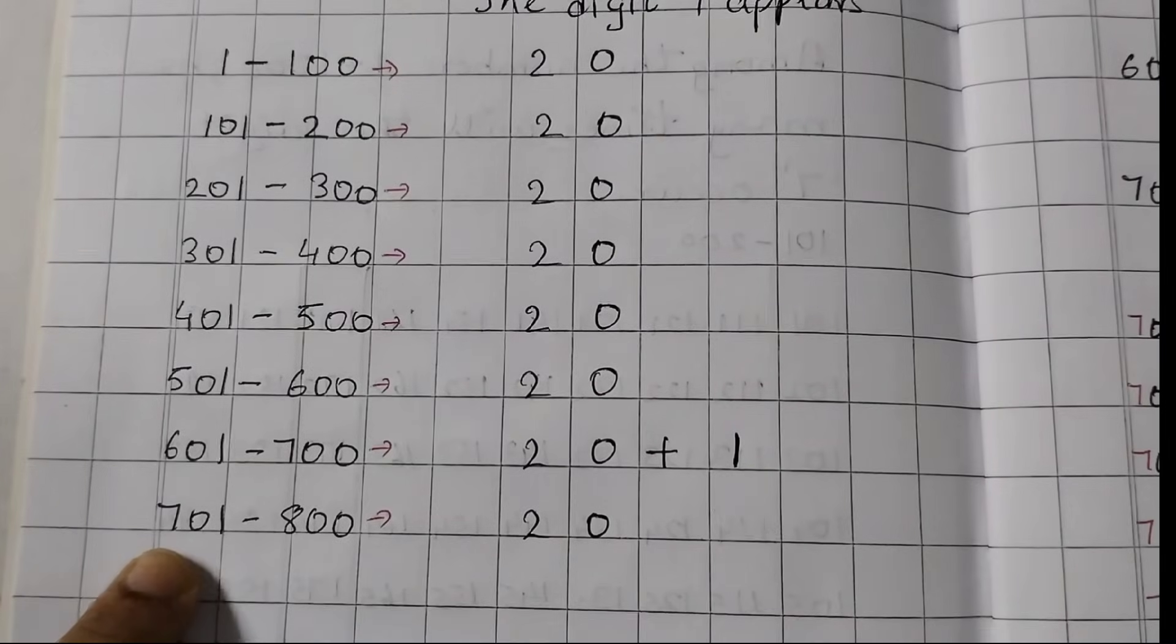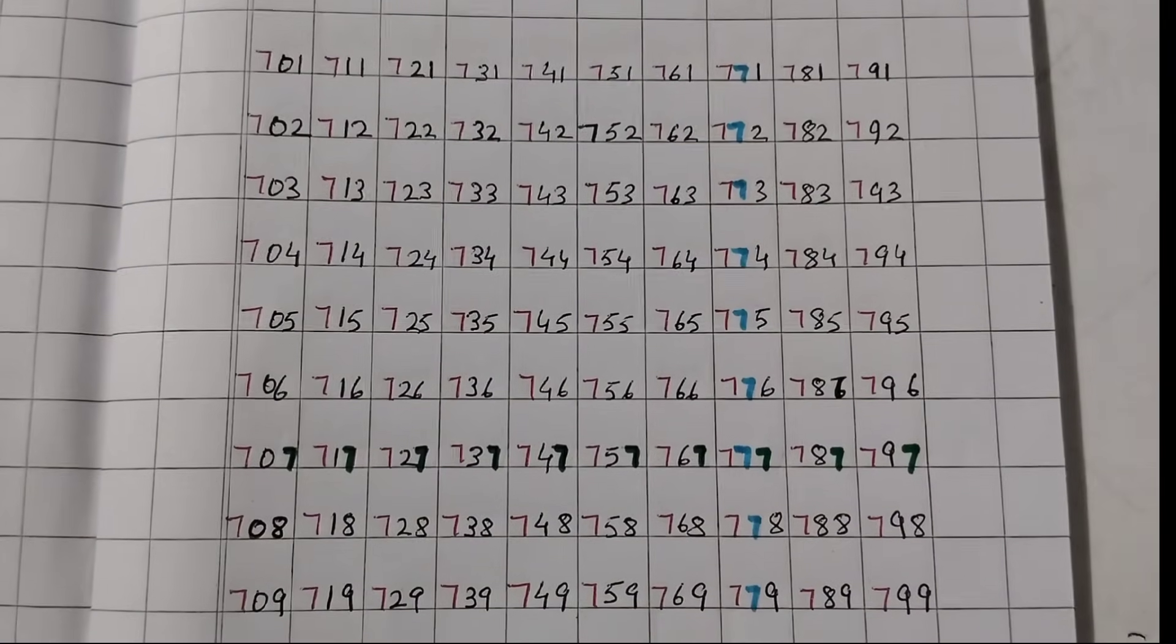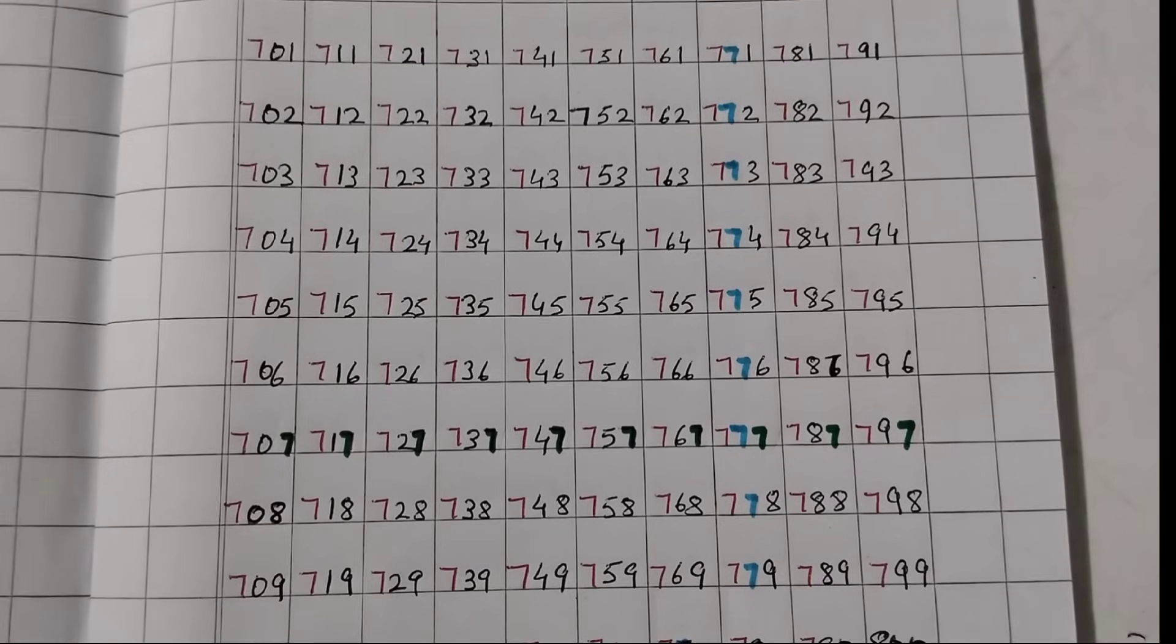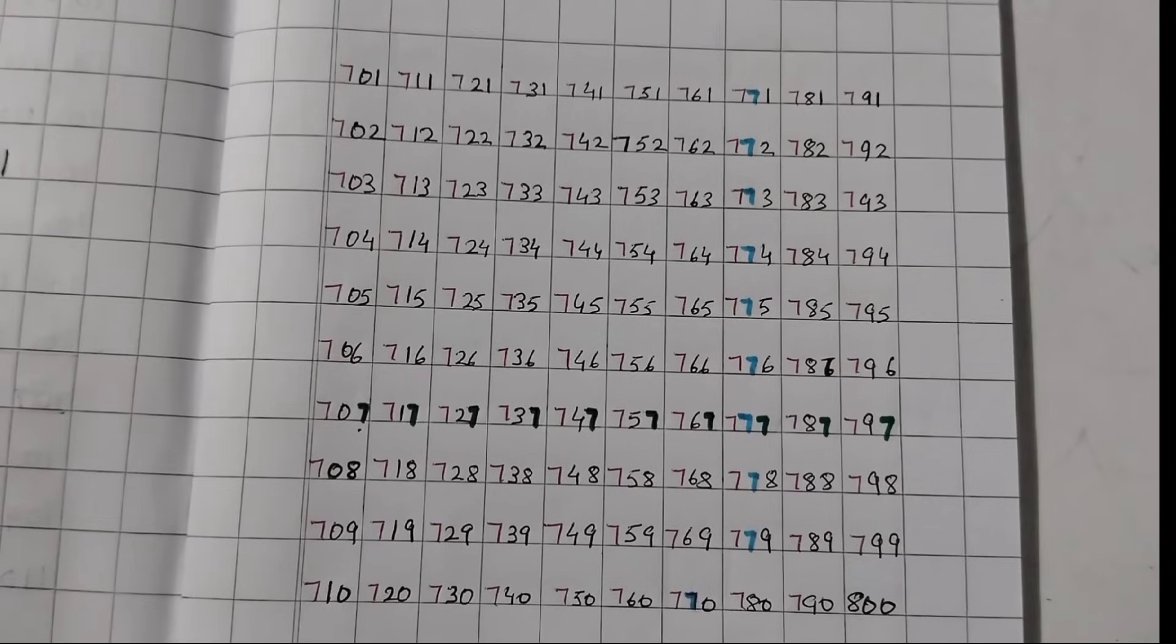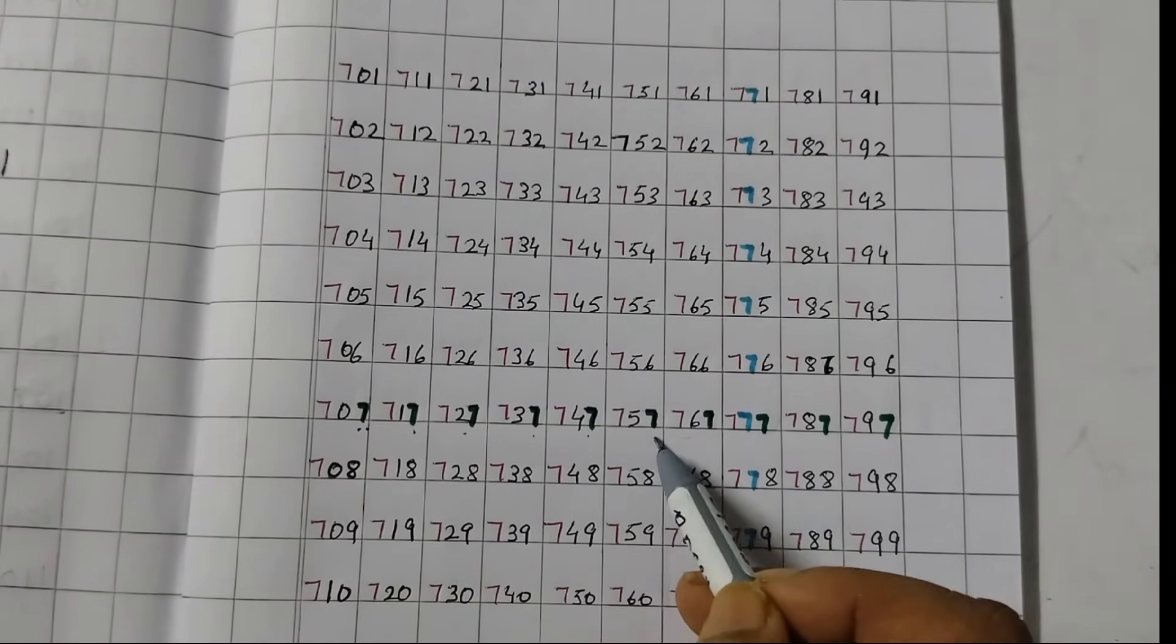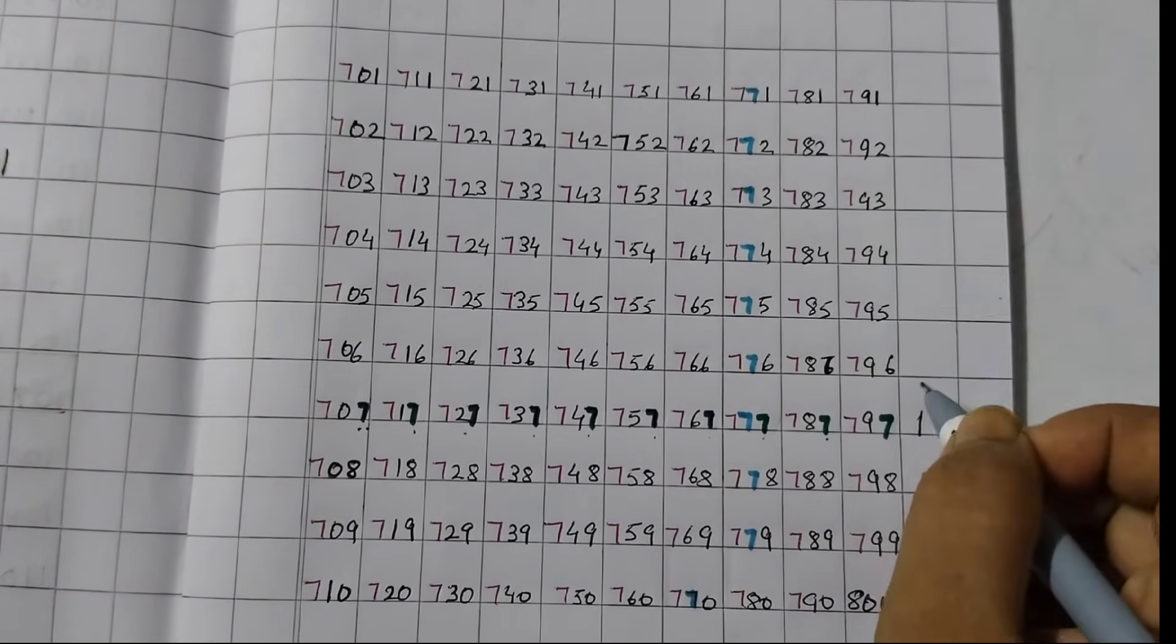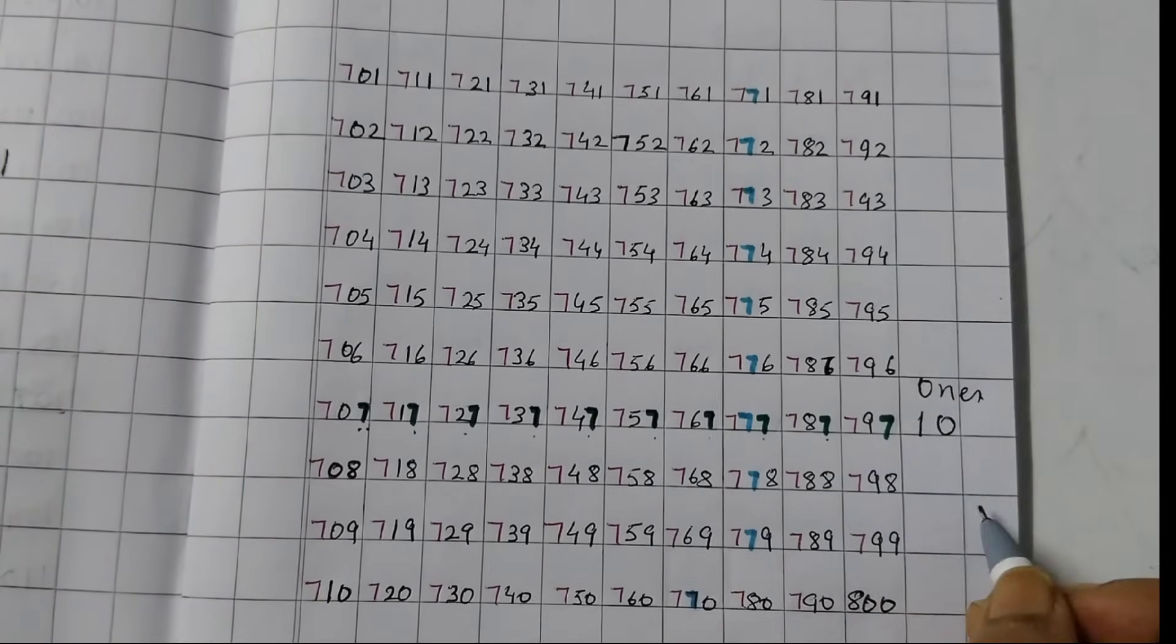Now, 701 to 800. Let's see this table here. I have written the numbers from 701 to 800. First, we will count the 7 in the ones place. So, 1, 2, 3, 4, 5, 6, 7, 8, 9, 10. This doesn't change. Ones place remains the same.